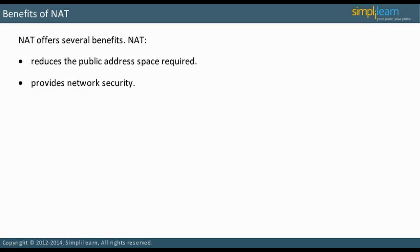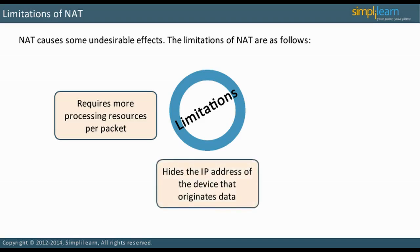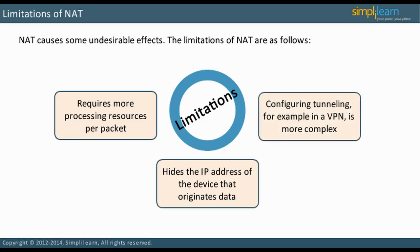NAT causes some undesirable side effects. NAT requires more processing resources per packet; the device that performs NAT must have additional processing power and memory to minimize any delay. NAT hides the IP address of the device that originates data. This is an advantage when hiding an address from someone outside the LAN, providing better security. However, it is also a disadvantage — for a network administrator, the lack of traceability makes it harder to troubleshoot. Some applications rely on end-to-end traceability to work properly. Configuring tunneling, for example in a virtual private network (VPN), is more complex with NAT.